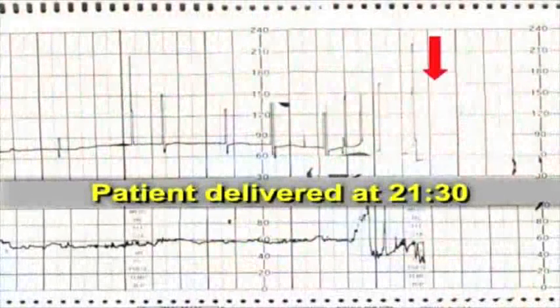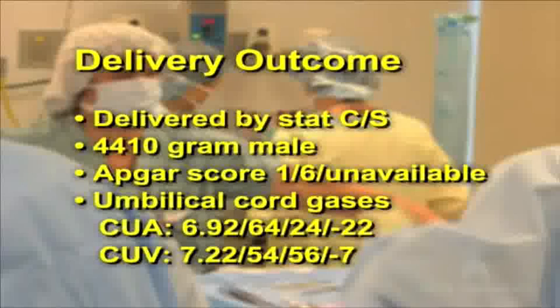At 2130, delivery is accomplished, 22 minutes after the onset of the fetal bradycardia. A 4410 gram male with Apgar scores of 1 and 6 is delivered by stat C-section with a cord umbilical artery gas of 6.92, 64, 24, and minus 22, and a cord umbilical venous gas of 7.22, 54, 56, and minus 7.